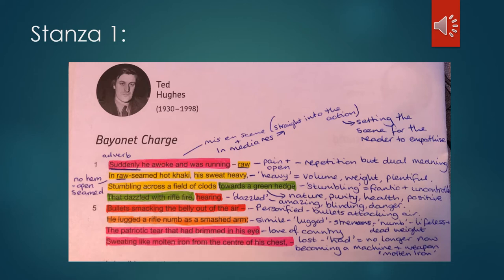Then we have the dash to raw in raw seemed hot khaki. So the first raw is he's feeling raw which is painful and open and isolated. The word raw is repeated but the repetition has dual meaning. So the second in raw he seemed hot khaki means that his hems of his khaki outfit are raw seamed, which means opened and there's no hem available. So it tells us how impractical the uniform is and rushed almost too. Then we have his sweat heavy. The heavy here tells us the volume of his sweat, how it's weighing him down and there is plenty of it. He's stumbling across a field of clods. Now a clod is a great big lump of earth. So it tells us that this field is broken up and is meaning that he is stumbling around which tells us that he's frantic and uncontrollable.